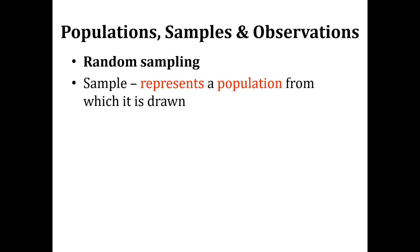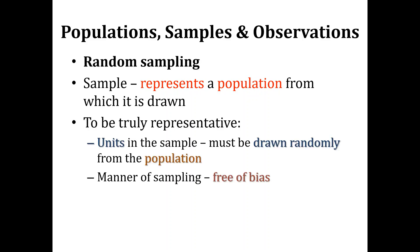As we know, a sample represents a population from which it is drawn. In the previous lecture we discussed that if the population size is large and it is not possible to take observations from each member, then we take observations from a subset — a smaller group of the population — known as the sample. To be truly representative, units in the sample must be drawn randomly from the population and free of any kind of bias.